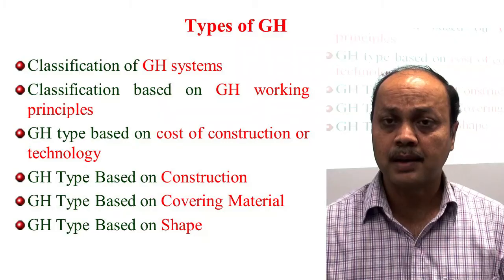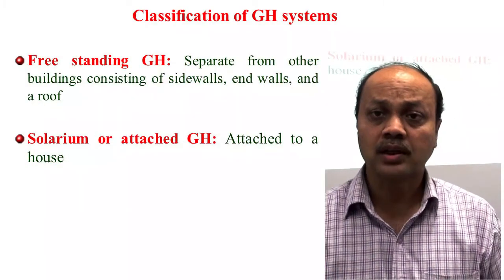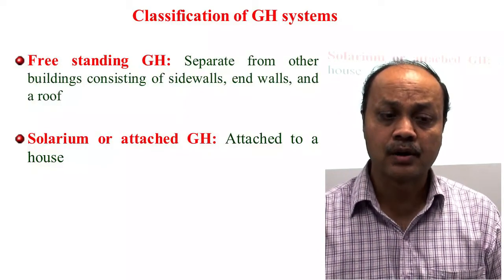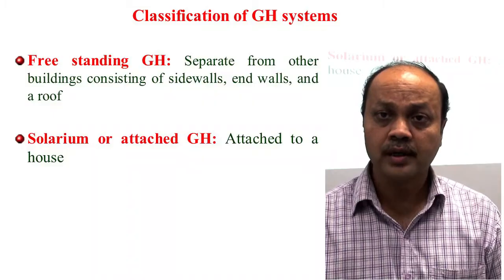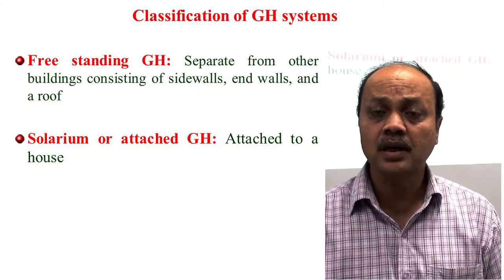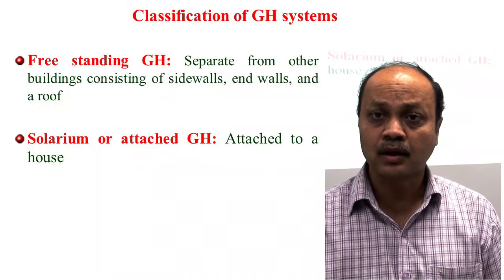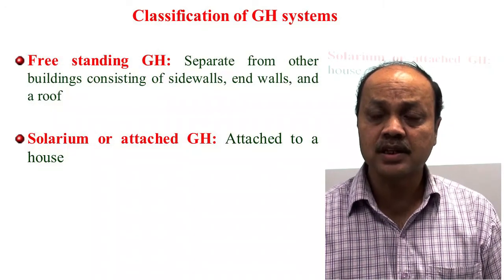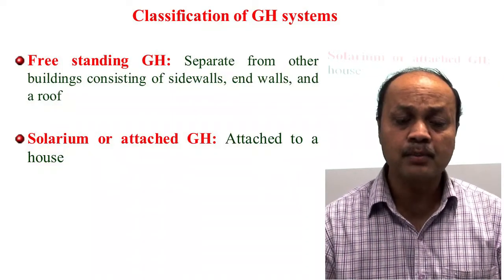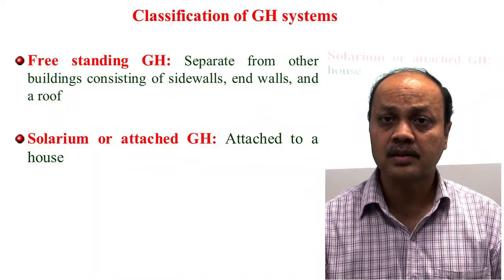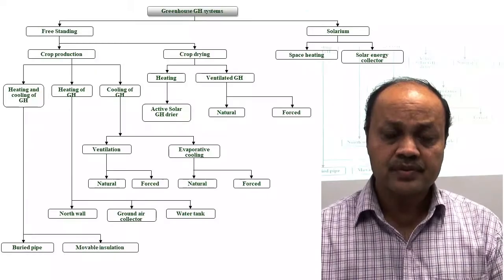The first classification is the greenhouse system. Broadly there are two types. First is the free-extending greenhouse, meaning all sides are not attached to any building or structure. Second is the solarium, or attached greenhouse, which is attached to some building or structure.